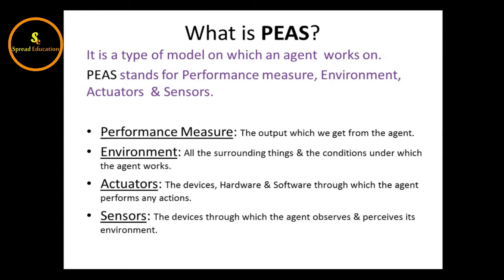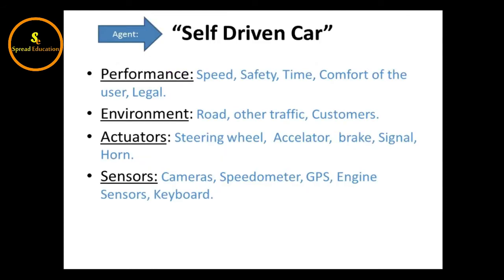Now there are a lot of examples. Let's take a self-driving car as an agent. What will be the Performance? Speed, safety, time — how much time it will take — comfort of the user or customer, and also legal versus illegal behavior. These are all the performance outputs.